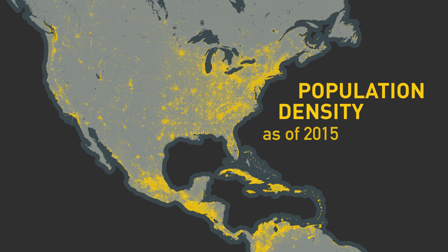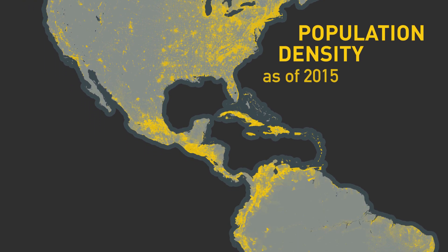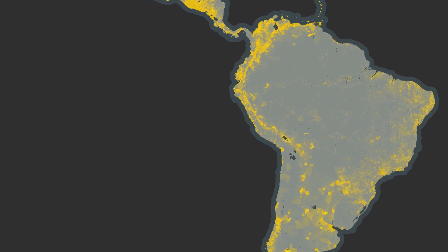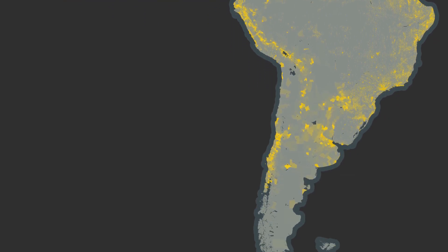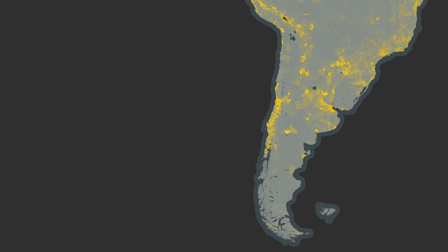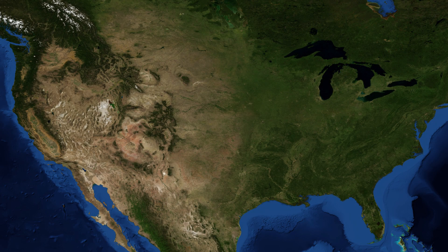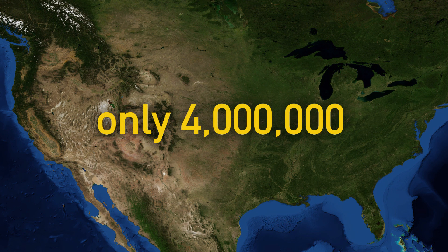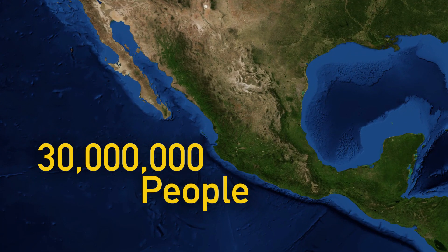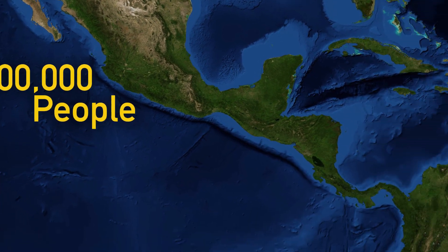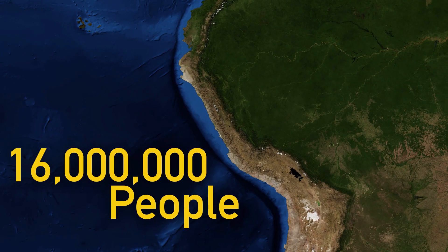With only about 400 million people alive at that time in total, the indigenous population in America was by no means small. But the population wasn't distributed evenly — there were big differences in population density and culture across North, Middle, and South America. North America had a comparably small population of only about 4 million, while in what is Mexico today there were about 30 million people, and the Inca territory in South America was home to another 16 million.